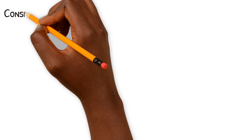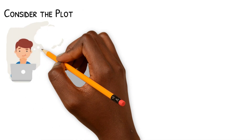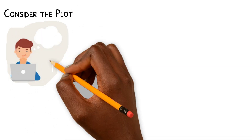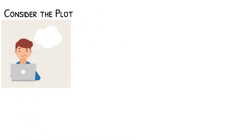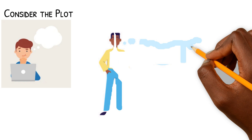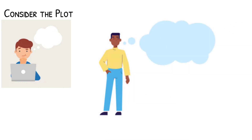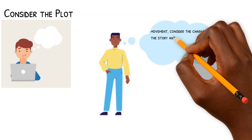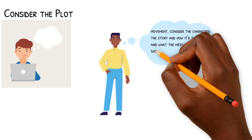Consider the plot. Most people don't think about a marketing video in terms of plot when they first start writing their video marketing script. While you won't be able to write a complicated story with multiple characters and actions, marketing videos still need movement. Consider the character, the story and how it's told, and what the message ultimately says about your company.